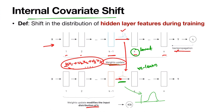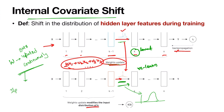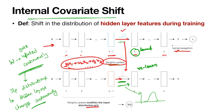During training, the weights keep continuously updating. Because of this, the data distributions to the intermediate layers keep changing continuously. This actually causes the input distributions to hidden layers to change continuously. For every weight update, for every training cycle, these distribution changes happen — this is the core problem of internal covariate shift.